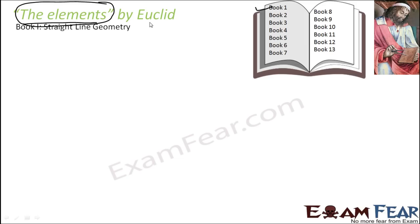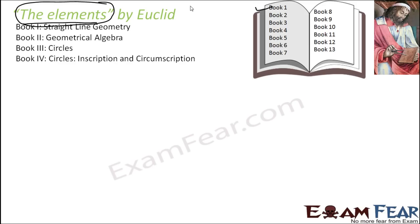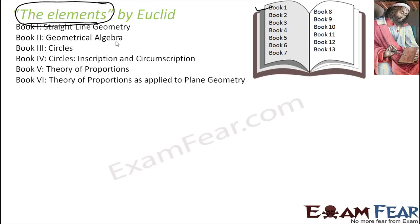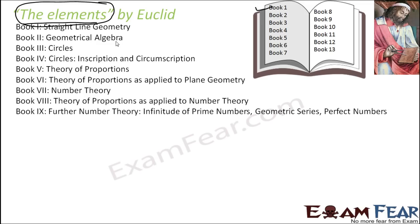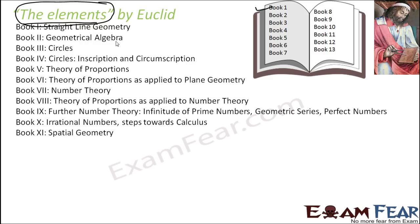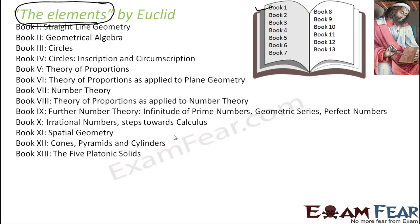Chapter 1 covers straight lines; chapter 2 covers geometrical algebra; chapter 3 covers circles; chapter 4 covers circle inscriptions and circumscriptions; chapter 5 covers theory of proportions; chapter 6 covers theory of proportions as applied to plane geometry; chapter 7 covers number theory; chapter 9 covers further number theory including prime numbers, geometric series, and perfect numbers; chapter 10 covers irrational numbers and steps toward calculus; chapter 11 covers spatial geometry; chapter 12 covers cones, pyramids, and cylinders; and chapter 13 covers the Platonic solids.